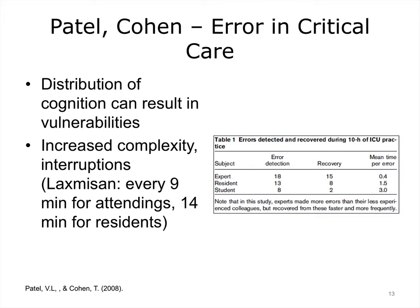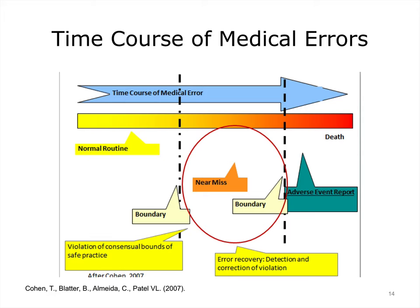Critical care is a complex environment in which clinicians are interrupted frequently. Studies showed that attendants were interrupted every 9 minutes and residents every 14 minutes. A distinguishing feature of medical expertise is that the greater the expertise, the shorter the time to detection and recovery from error. Experts had a mean recovery time of 0.4 minutes, while residents took 1.5 minutes and students 3 minutes. Experts made more errors but recovered from them faster and more frequently. Errors only happen when the process approaches and exceeds the boundaries of normal practice.